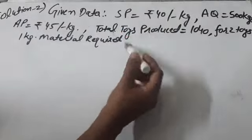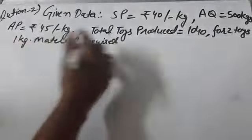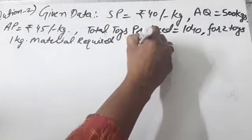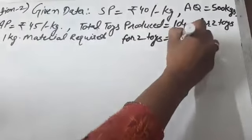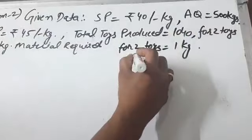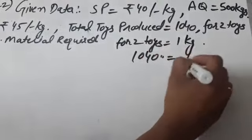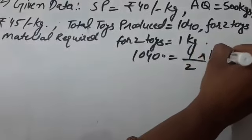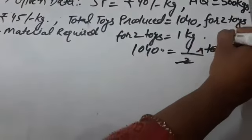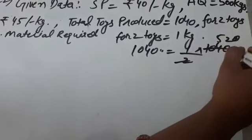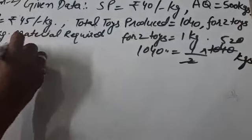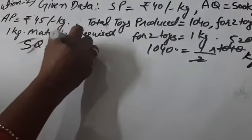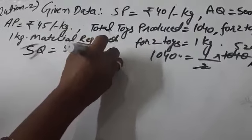For two toys, one kg material is required, and for 1040 toys, one upon two multiply 1040. It means 520 kilograms material is required, so standard quantity is 520 kilograms.